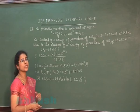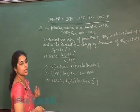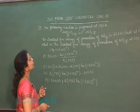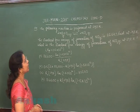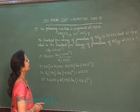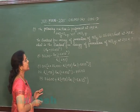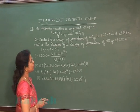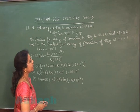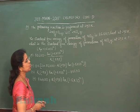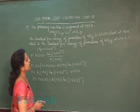So proceeding towards the second last question. Question number 89. The following reaction is performed at 298 Kelvin. 2 NO plus O2 gives 2 NO2. The standard free energy of formation of NO is 86.6 kJ per mol at 298 Kelvin.